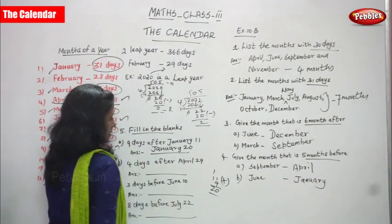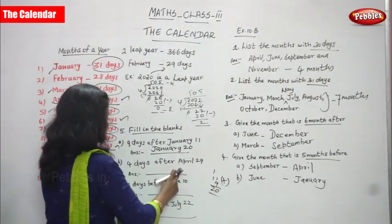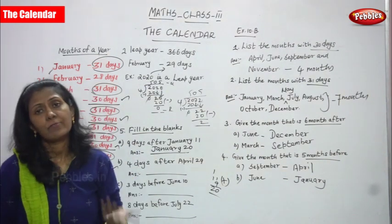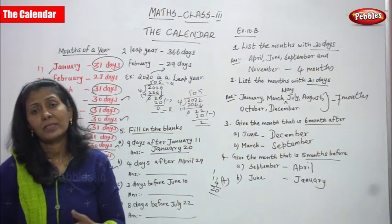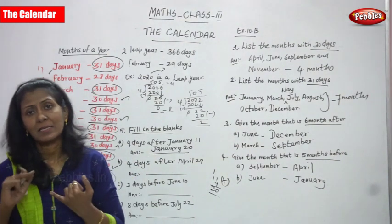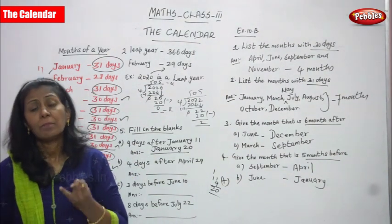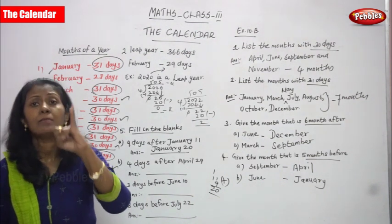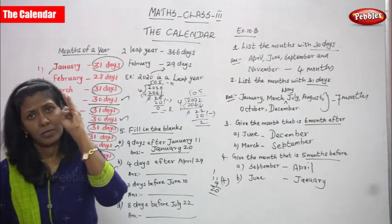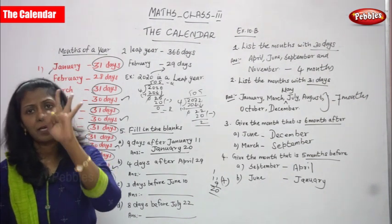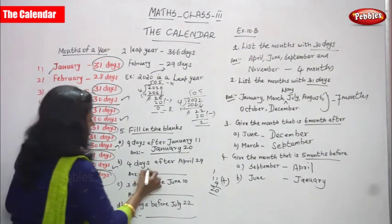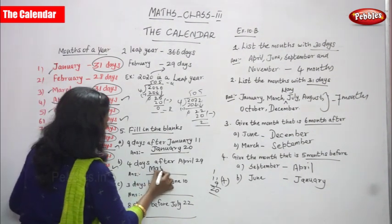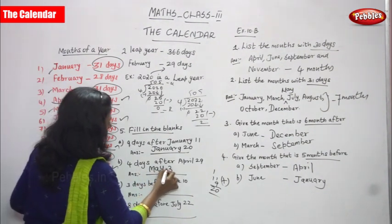4 days after April 29. You should not consider April 29. April has 30 days, so: April 30, May 1, May 2, May 3. The answer is May 3.